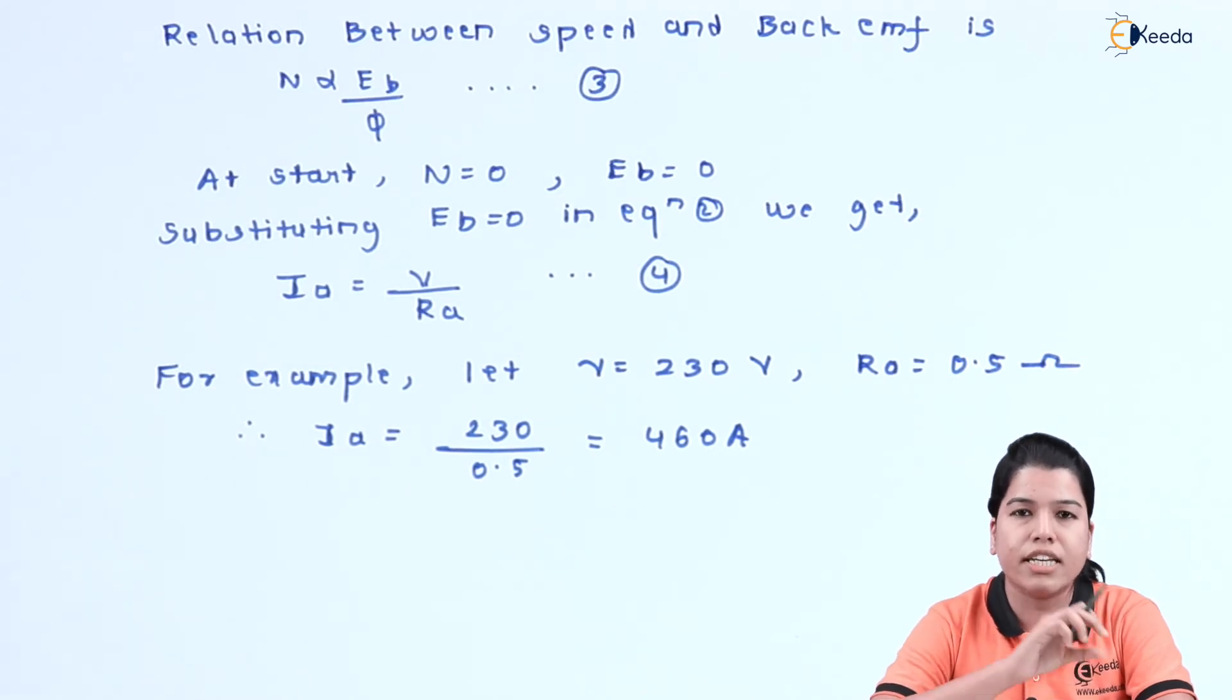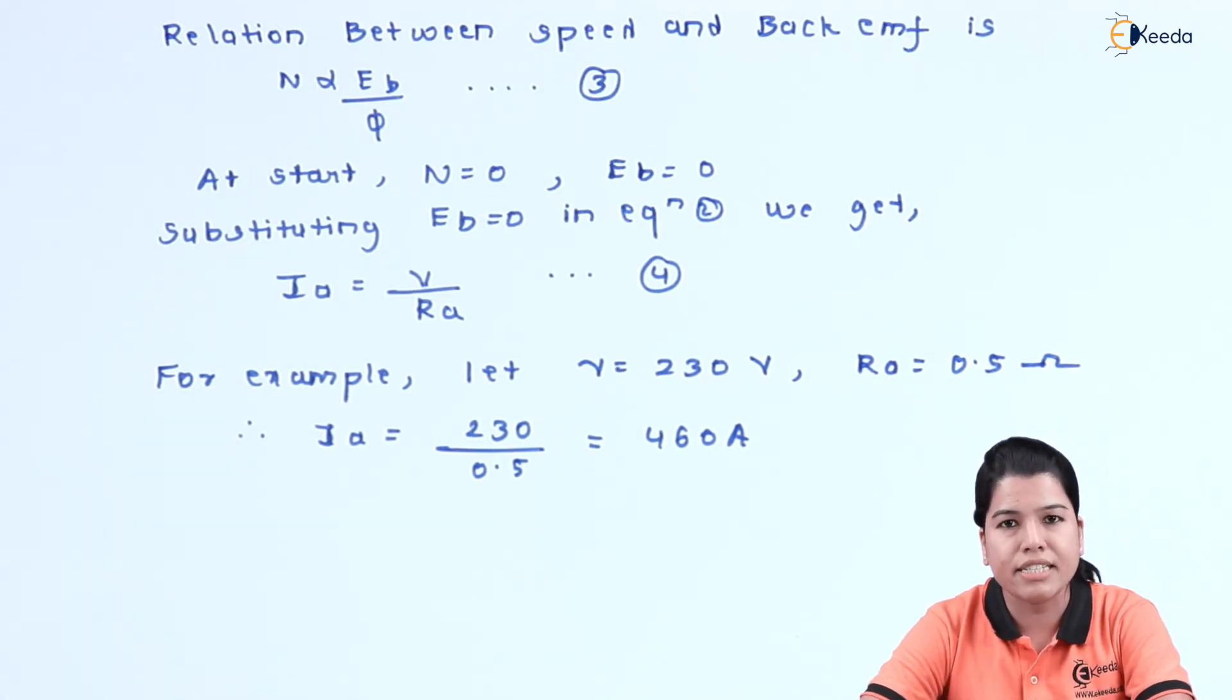For doing this, a series resistance is connected in series with the armature. At starting, the value of resistance is high. As the motor speed goes on increasing, the value is slowly decreased up to it gets the enough speed, and due to this enough speed, the enough amount of back EMF is built up. Once we get the required value of back EMF, the back EMF itself will control the armature current.